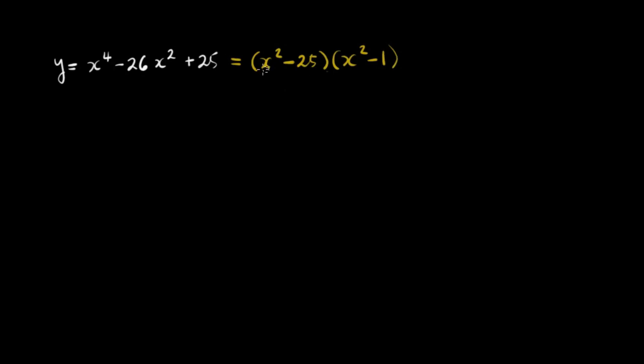So that's x to the 4th minus x squared minus 25x squared plus 25. And this is a difference of two squares. So you can further factor this as x plus 5 times x minus 5 times x plus 1. I'm factoring now this, x plus 1 times x minus 1. And this is the complete factorization of our function. So this is now your y.